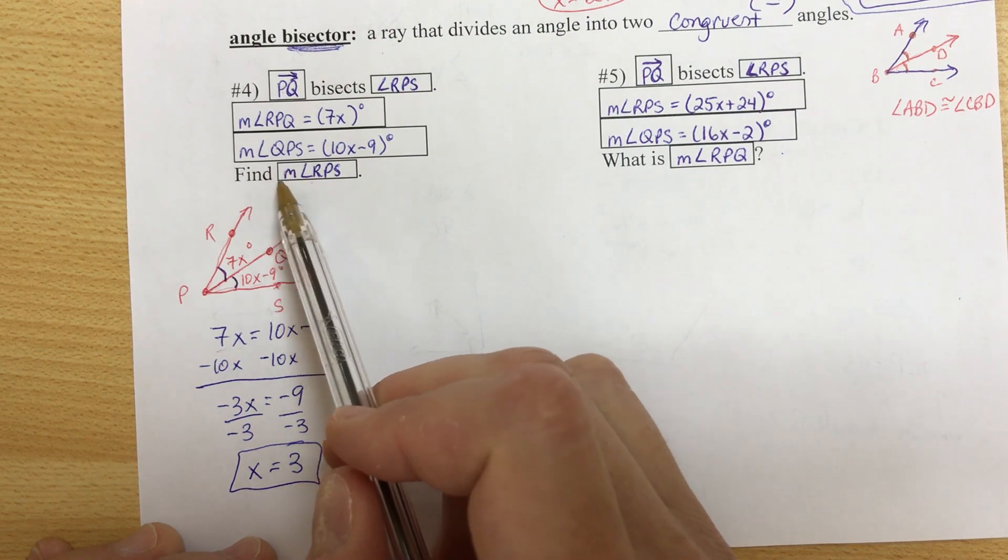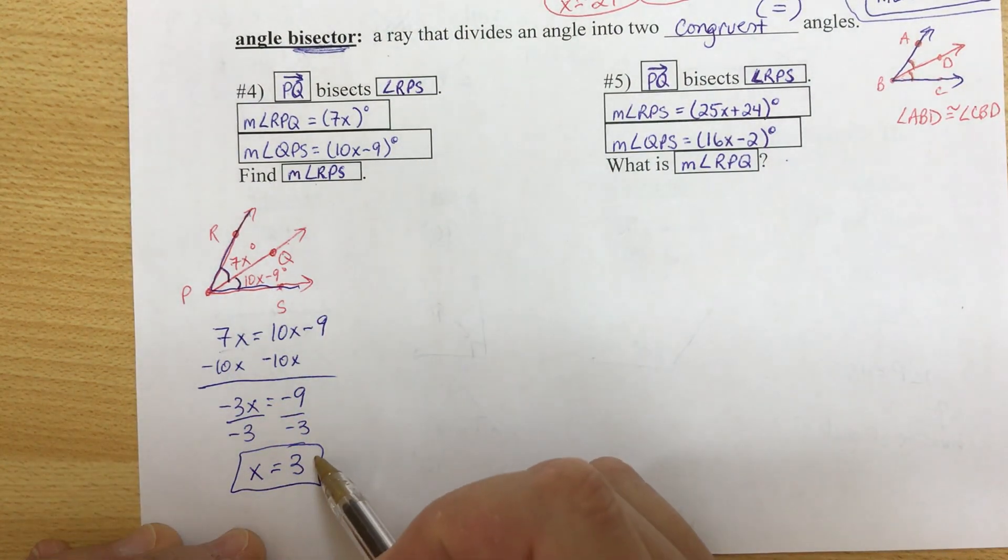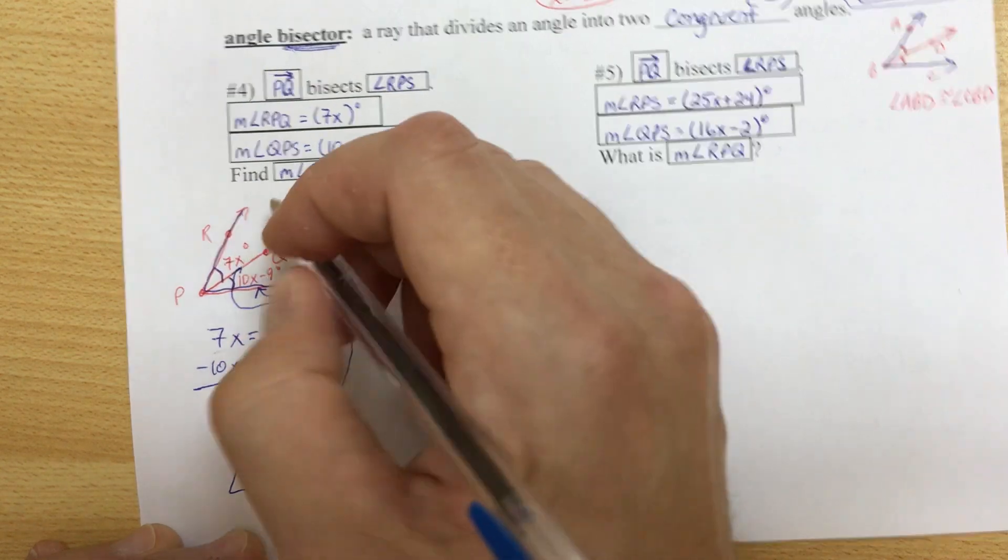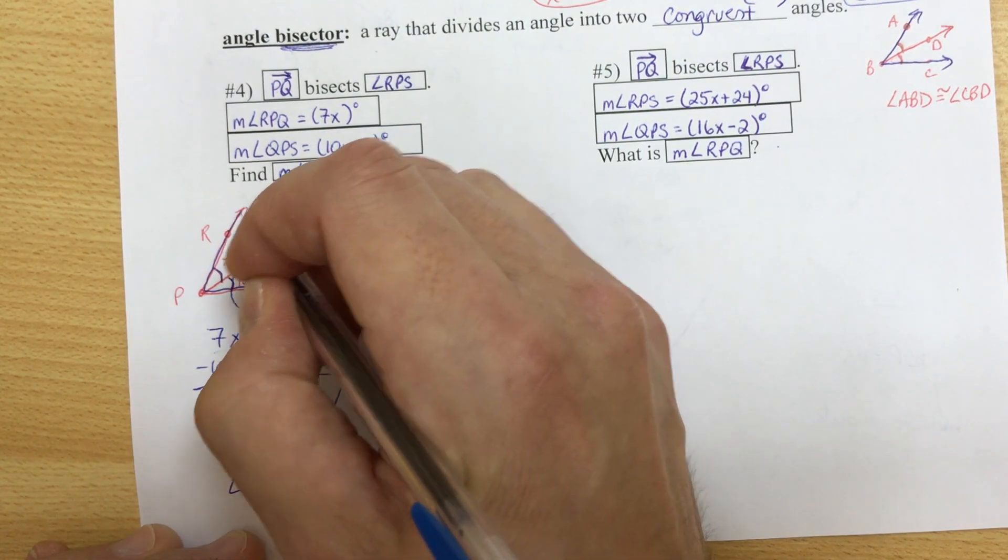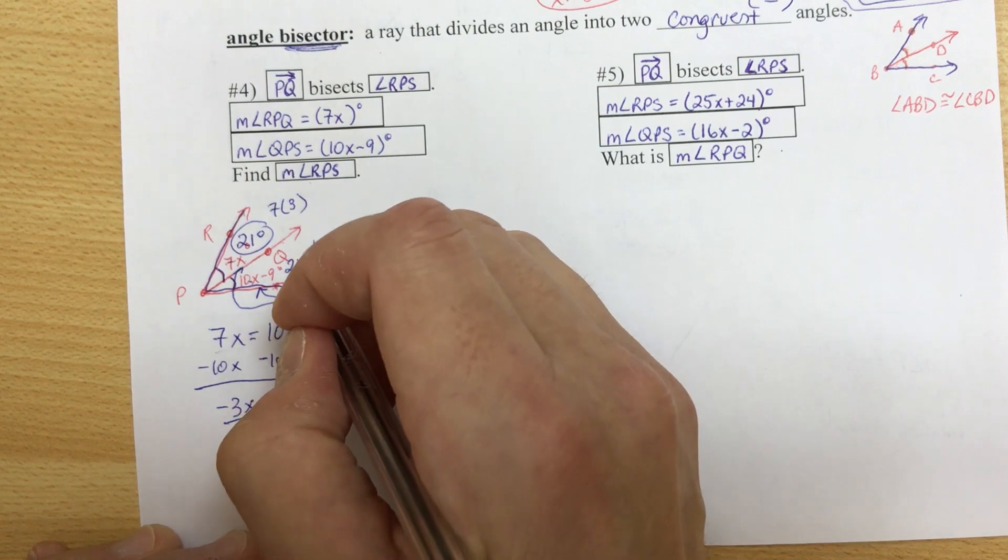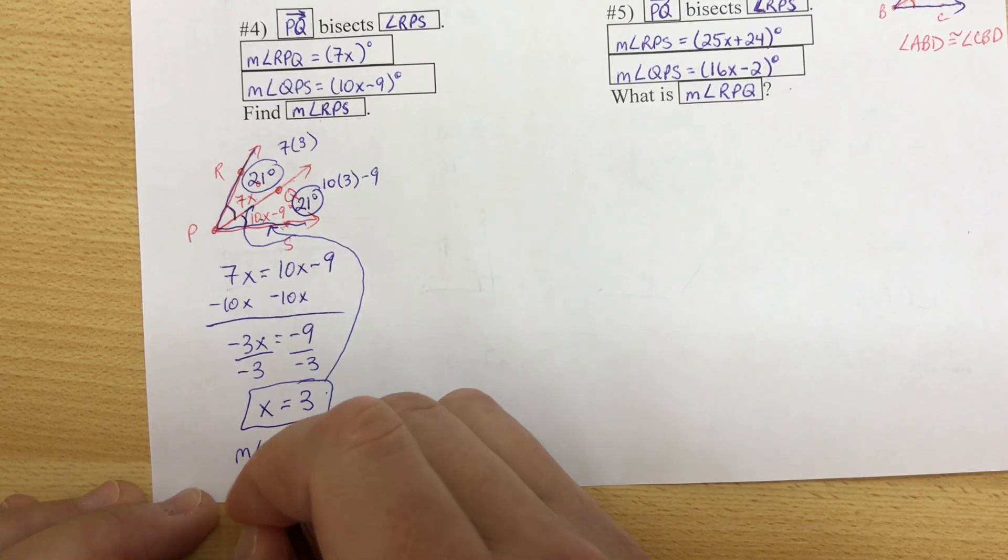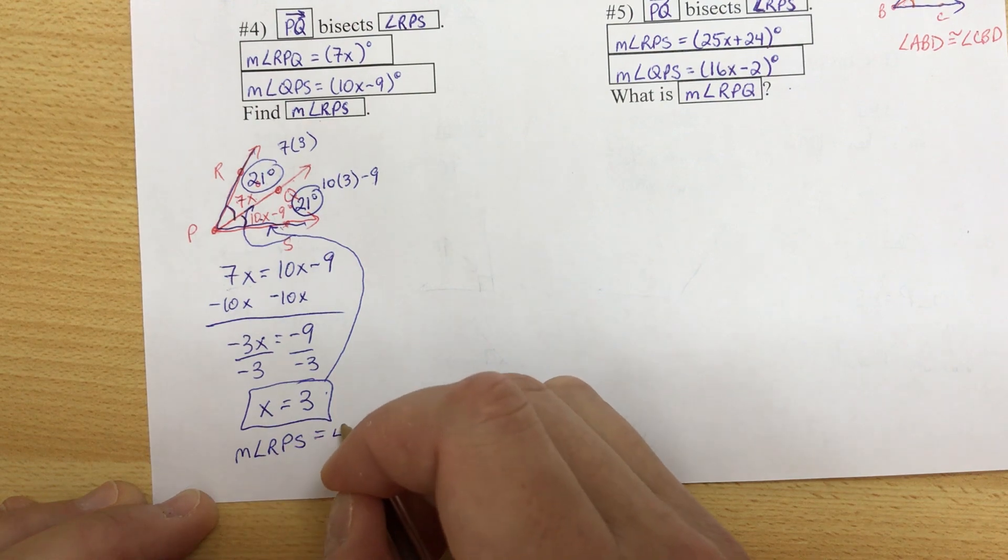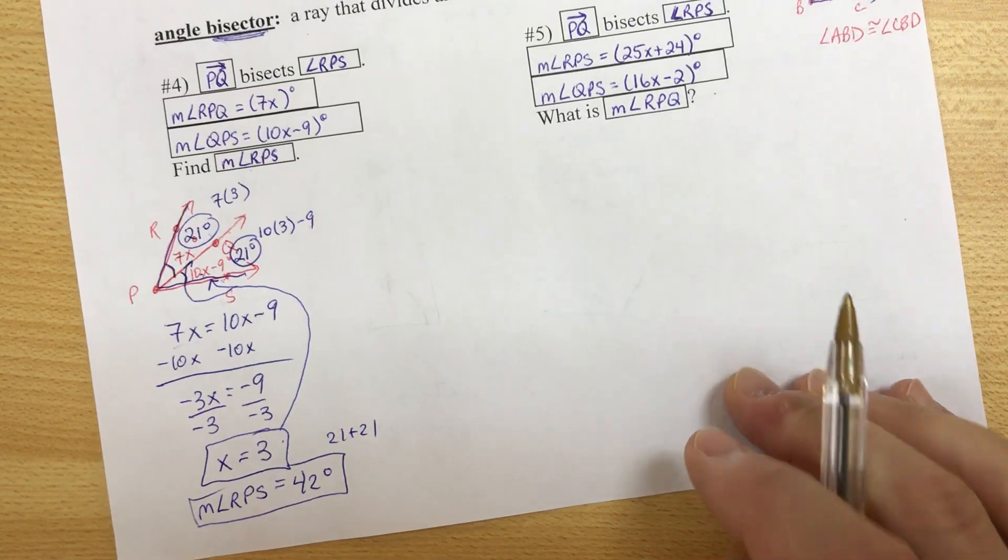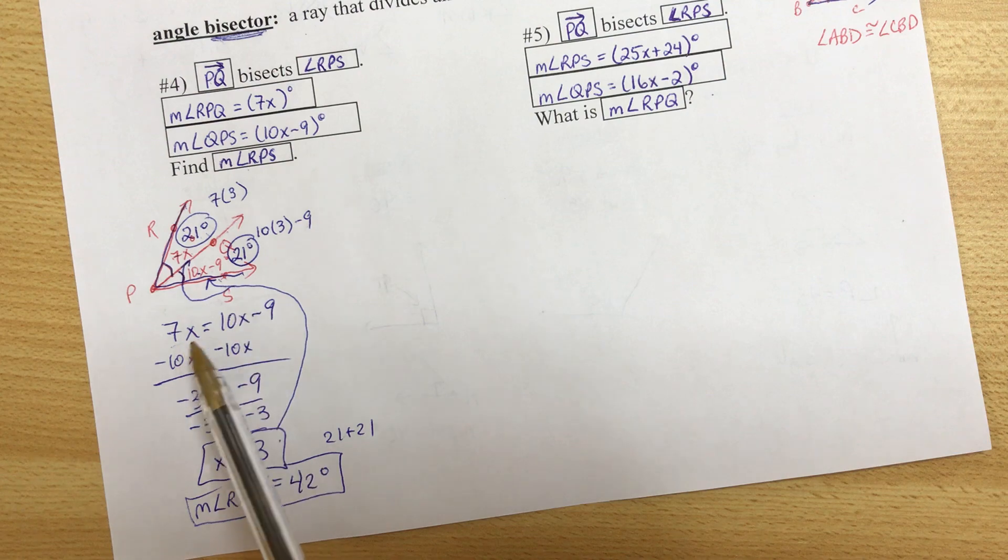Now the question, what they want, is to find the measure of angle RPS, which is the whole thing. Let's take our answer. Let's go back to the picture. And we're going to substitute that wherever we see an x. So 7x, 7 times 3 is 21. 10x minus 9 is 10 times 3 minus 9. 30 minus 9 is 21. So the whole thing, what do we do with the parts? We add them. So the measure of angle RPS, that's going to be 42 degrees. 21 plus 21. And that's it. Look at all the work that we have to do. It's really important to draw the picture because that makes it more obvious what the relationship is.